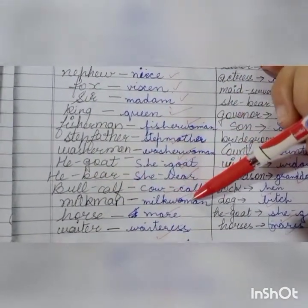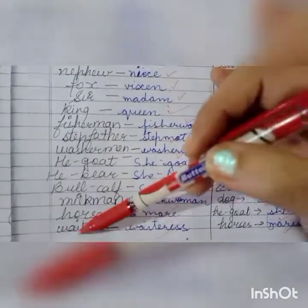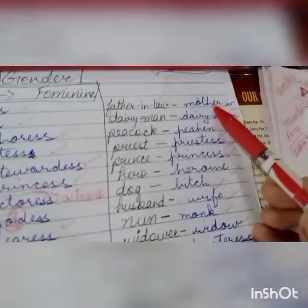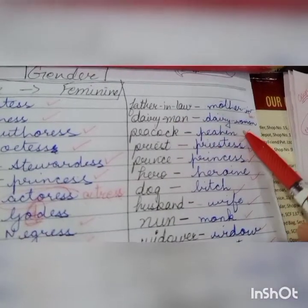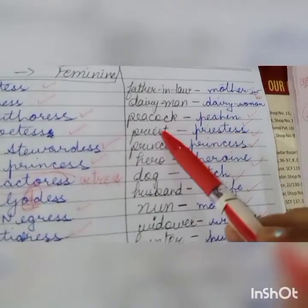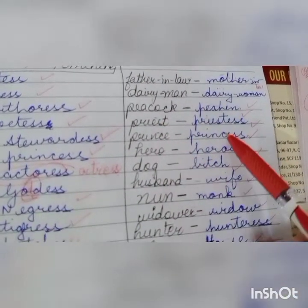Milkman → milkwoman. Horse → mare. Waiter → waitress. Father-in-law → mother-in-law. Dairyman → dairywoman. Peacock → peahen. Priest → priestess. Prince → princess.